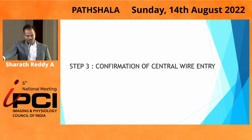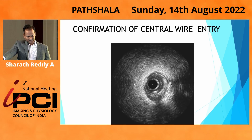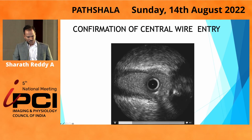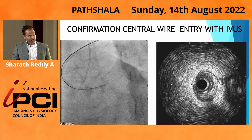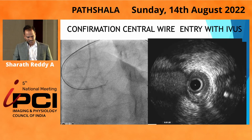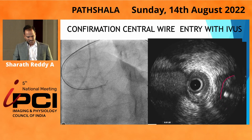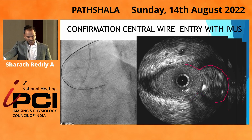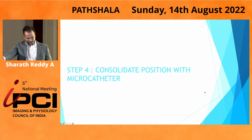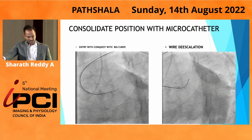Once you enter the cap, confirm with IVUS. You can see the wire shadow — it should be within the media in all views. Here you can see the wire and the limit of the media — wire within the media, confirmed again in another view. You confirm it by IVUS, then consolidate your position by sending a microcatheter into the proximal cap, de-escalate the wire, and move on.